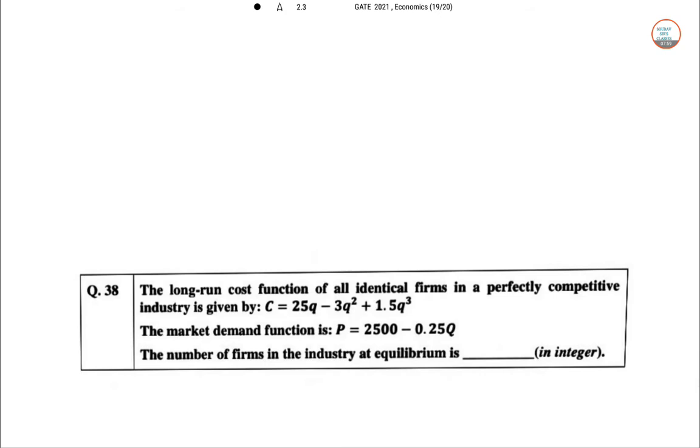Q38: The long-run cost function of all identical firms in a perfectly competitive industry is given by C = 25q - 3q² + 1.5q³. The market demand function is P = 2500 - 0.25Q. The number of firms in the industry at equilibrium is what?